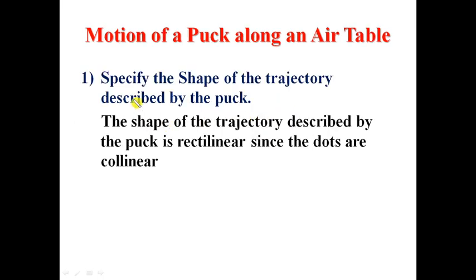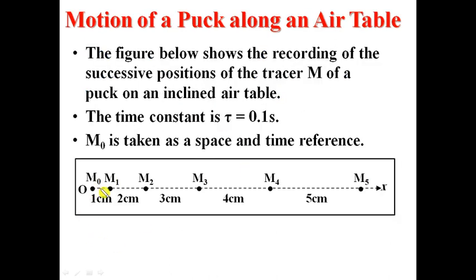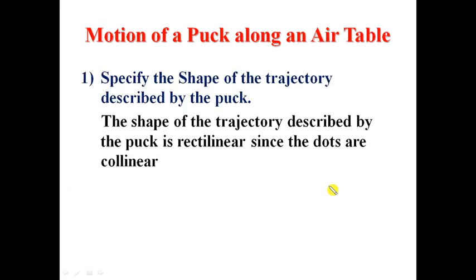Our objective is to answer the following questions. Question 1: Specify the shape of the trajectory described by the puck. The dots are collinear. The puck is moving along a straight line. Therefore, the trajectory described by the puck is rectilinear. As we said before, we call it rectilinear motion - motion along a straight path.